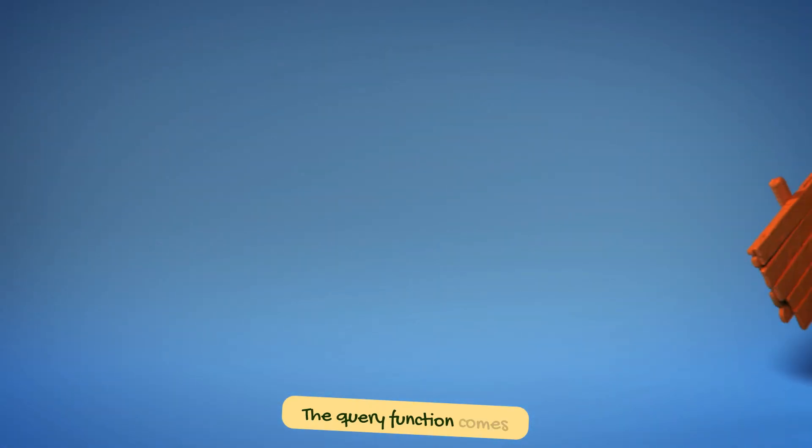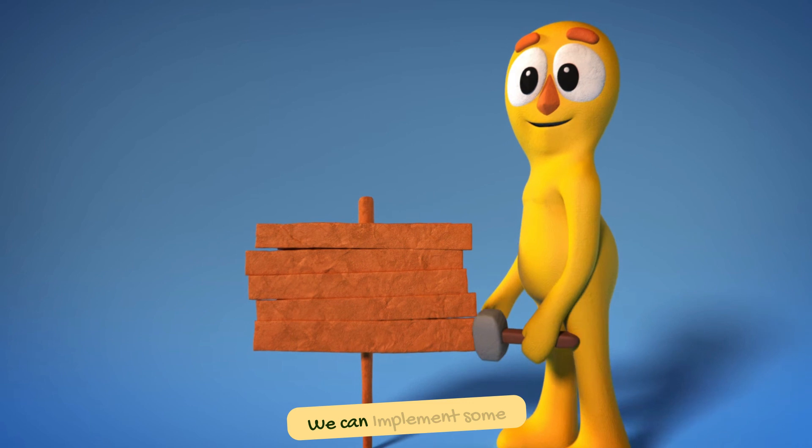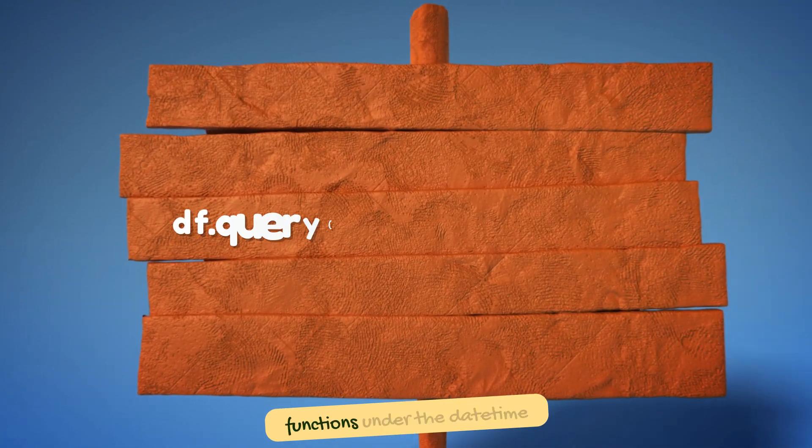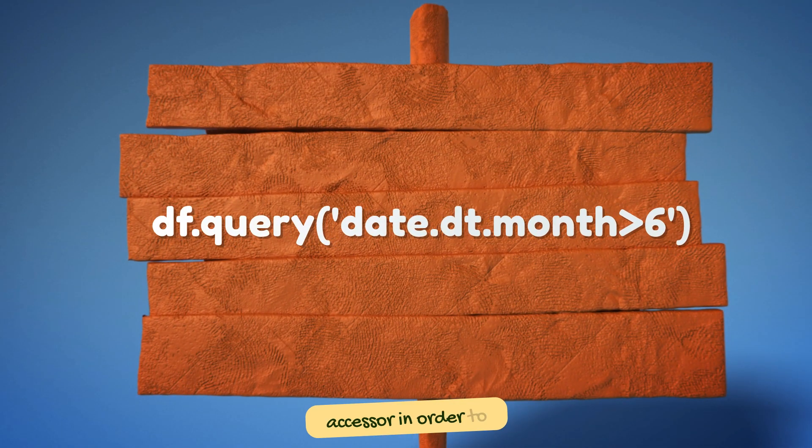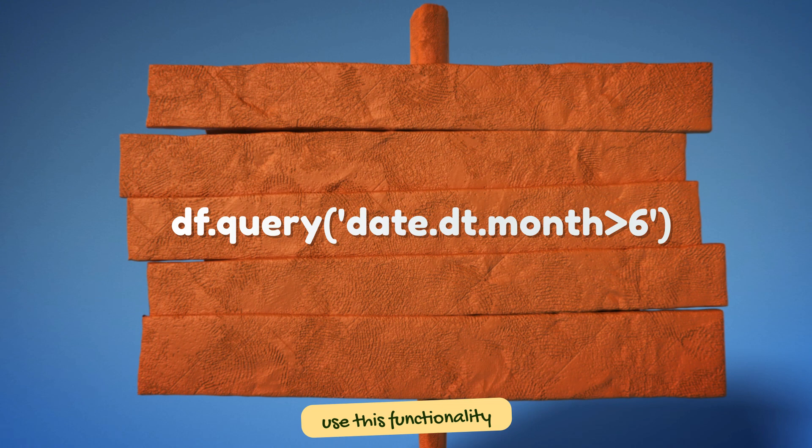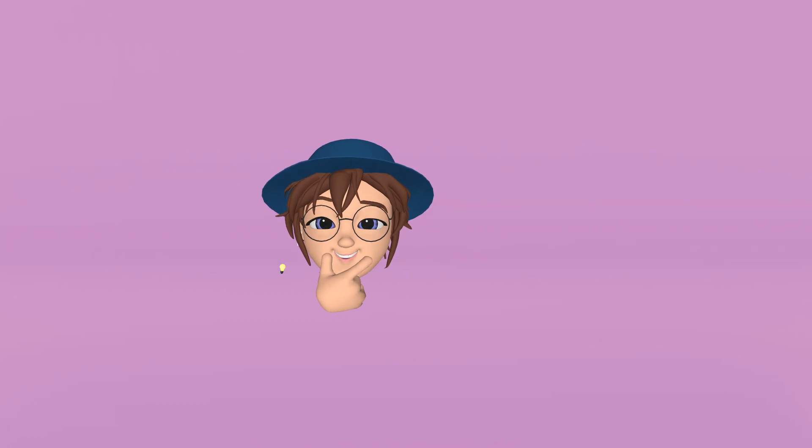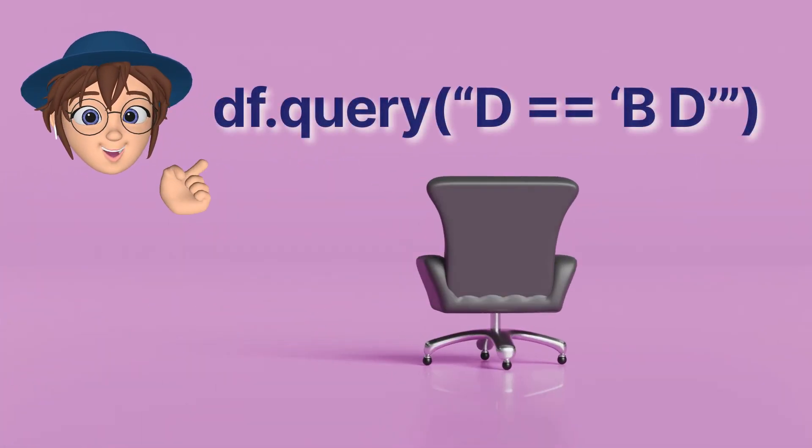The query function comes in handy when working with dates and times as well. We can implement some functions under the datetime accessor. In order to use this functionality, we need a column with dates and times. I hear you ask, what if the column name has space in it? Easy, you just wrap the column name in backticks like this.